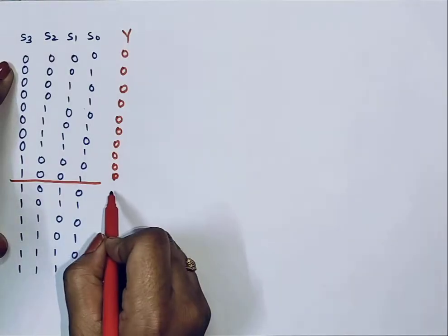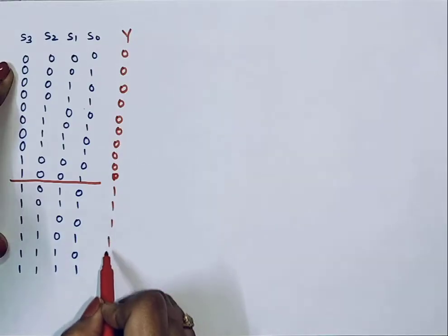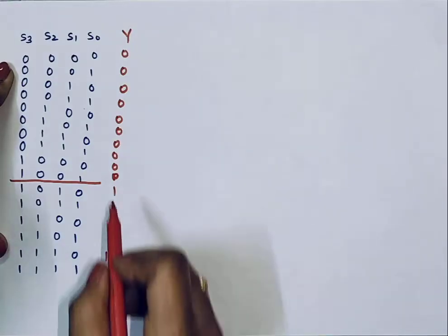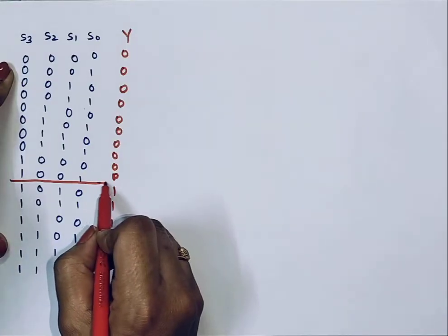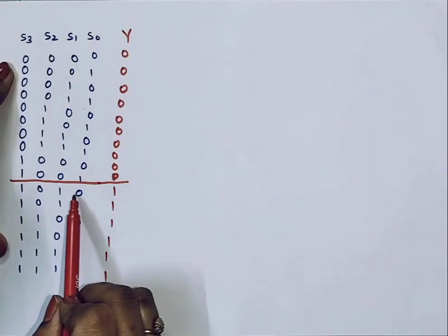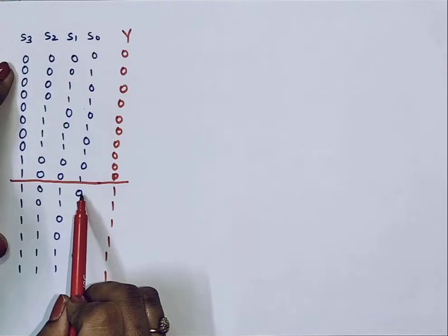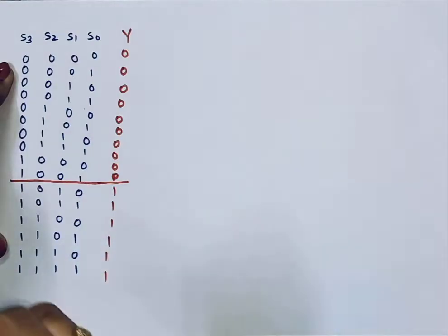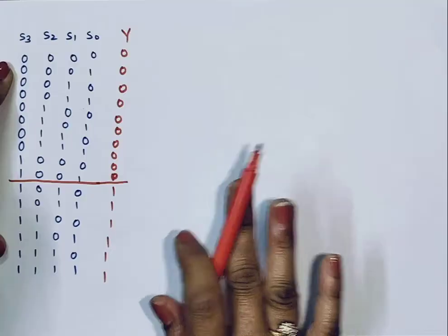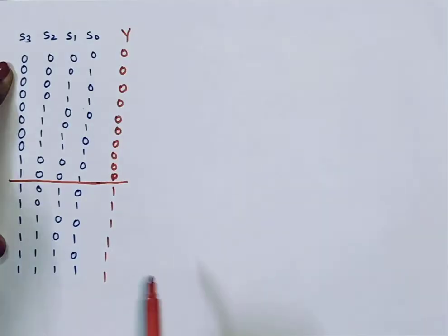Correction is required for all sums above 9. Why? Because 1010 and above are not valid BCD numbers. We need to add 6 to the sum so that we will get a valid BCD number.